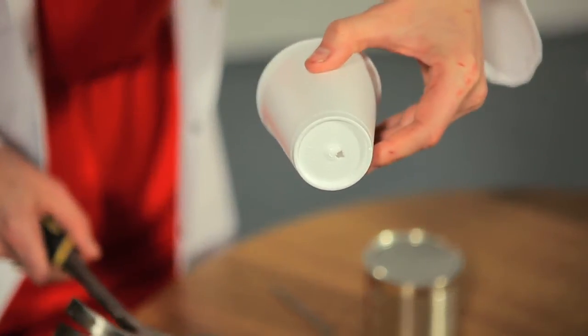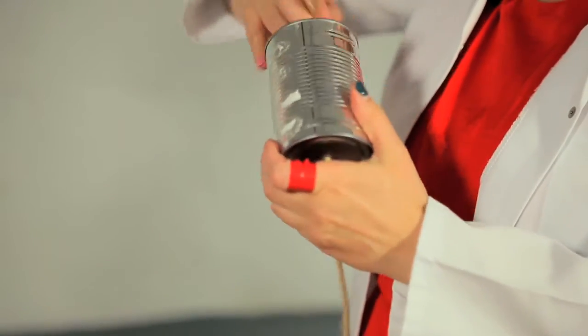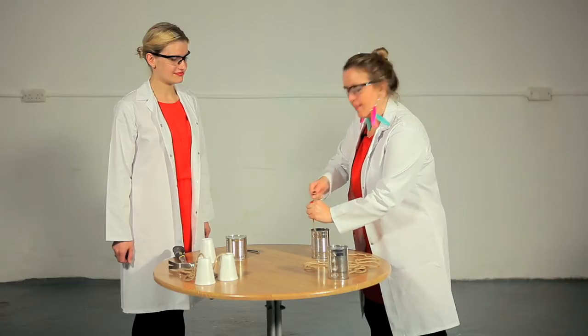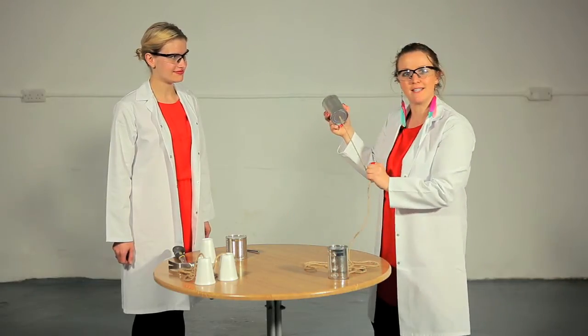This creates a hole which we then feed the string into and tie a knot in it to stop it coming out the other side. There we go, put a knot in it and make sure it's nice and tight.